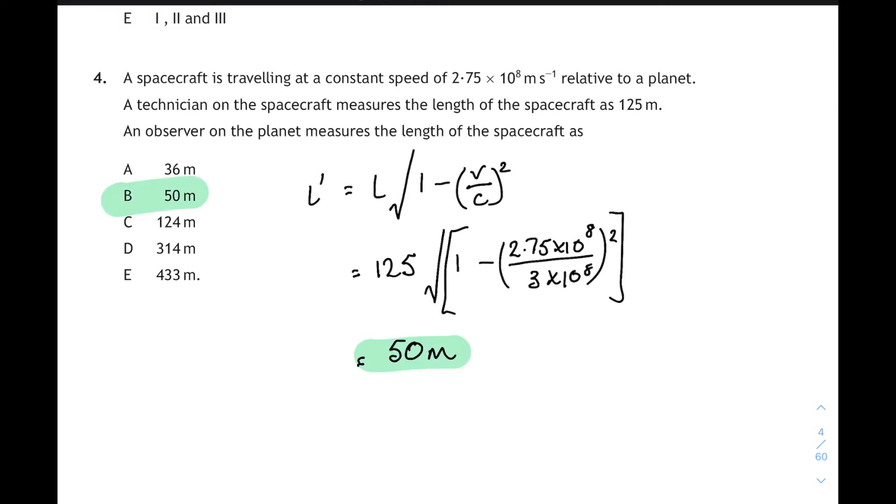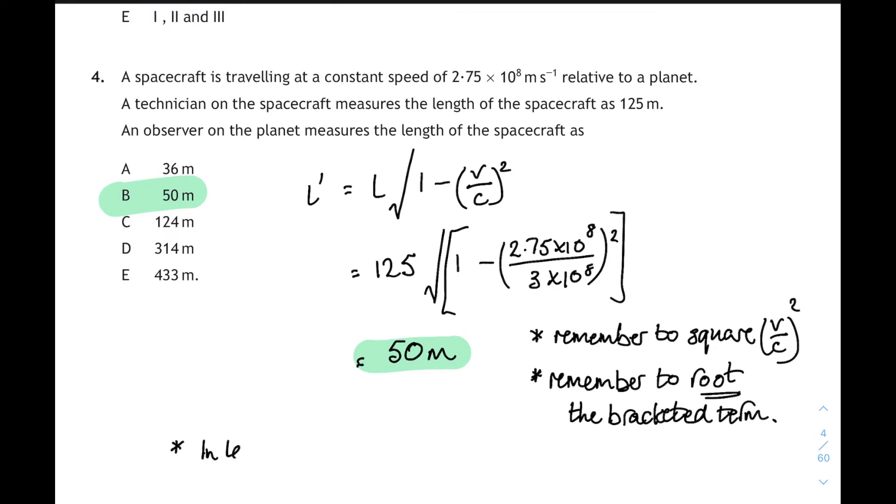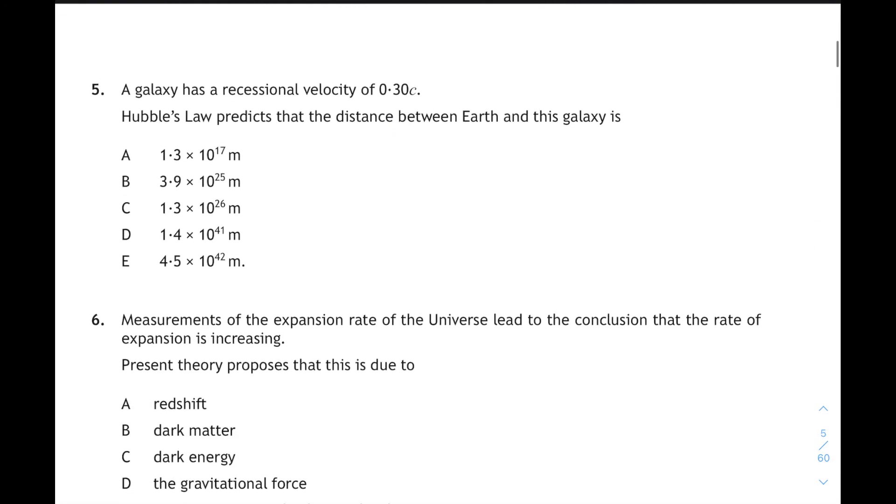And in this case, we get an answer of 50 meters. That corresponds to answer B. So remember to square and remember to square root. Also, in these questions, remember the length is always shorter. So you can always have a guess. If the proper length was 125, then you could have a guess at A or B or C. Length is always shorter. Right, question 5.